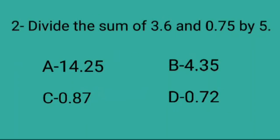Divide the sum of 3.6 and 0.75 by 5. A. 14.25, B. 4.35, C. 0.87, D. 0.72.